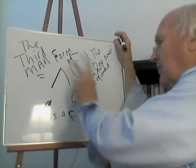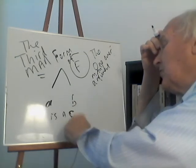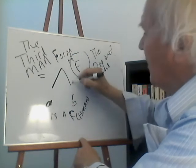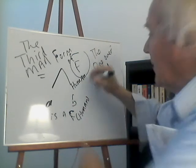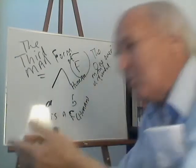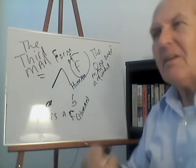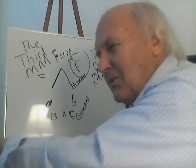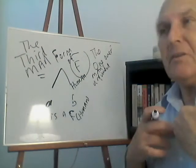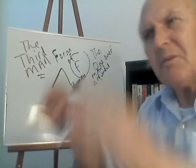The third man argument goes like this: let's see what happens if the one over many argument is true. If Socrates is human and Plato is human, they participate in the perfect human. But the perfect human is itself human — and that doesn't make sense. Socrates can be human, Plato can be human, I can be human — but human is not human. Individual people are human. Likewise, I could be tall, you could be tall, someone else could be tall — but is tall itself tall? No, tall is not tall. A can be beautiful, B can be beautiful — but is beautiful itself beautiful? No, beautiful is not beautiful. Individual things are beautiful.